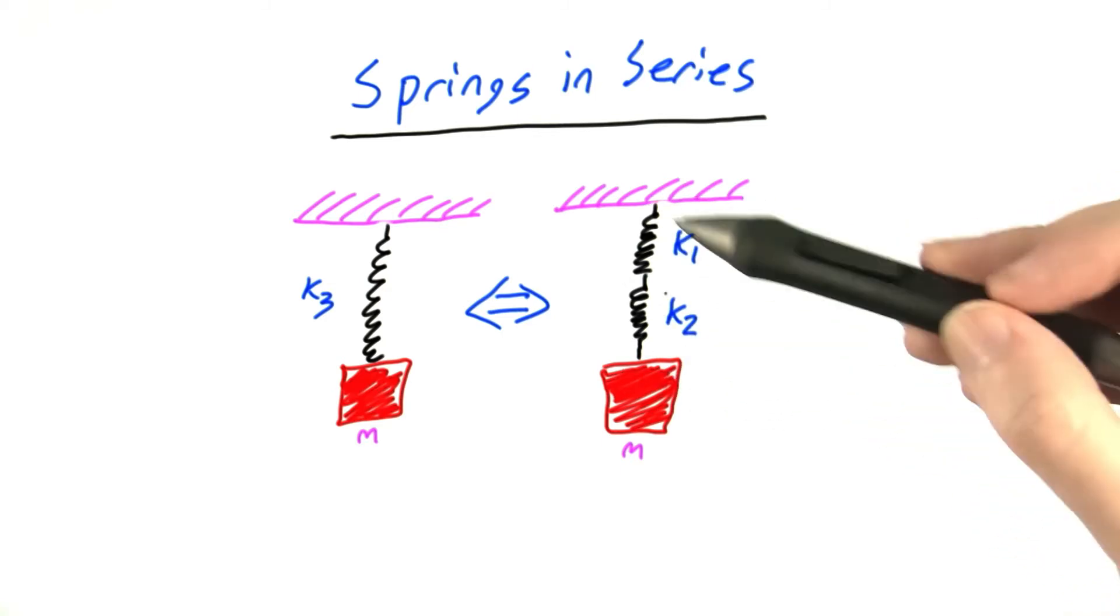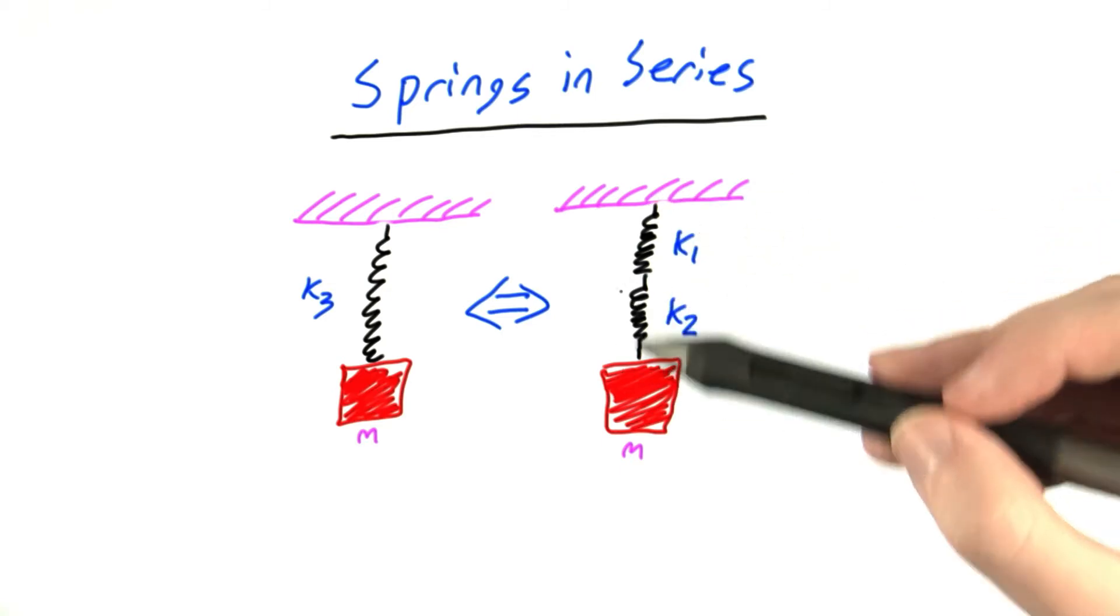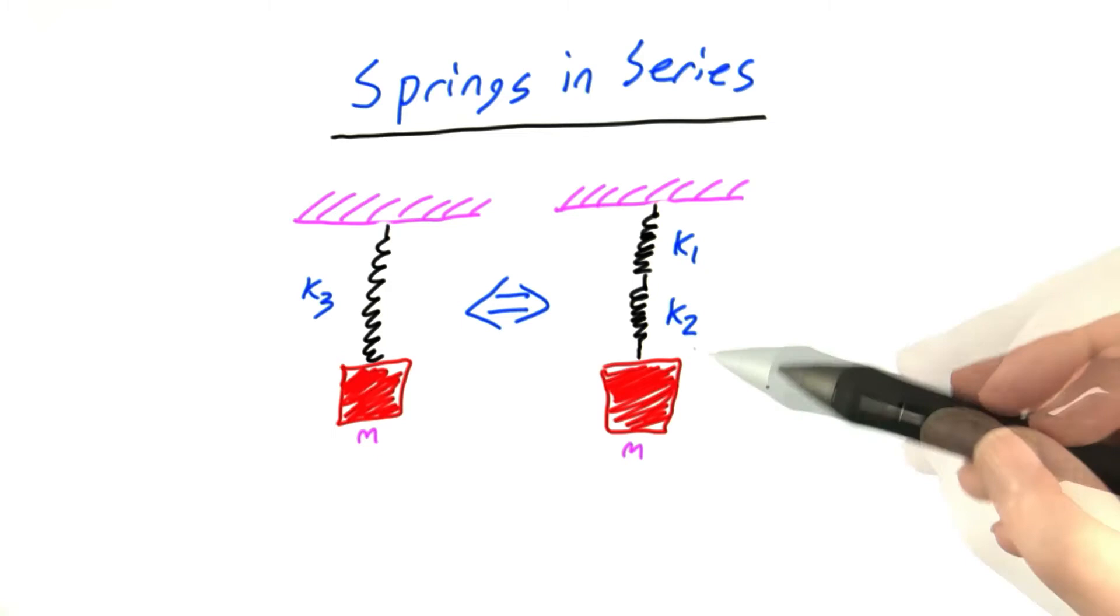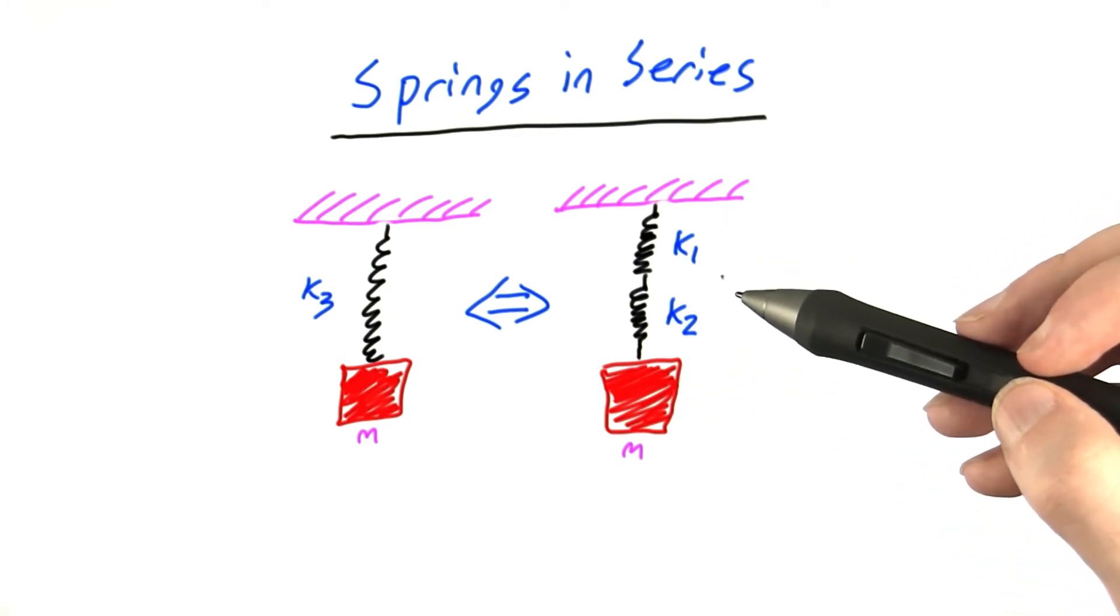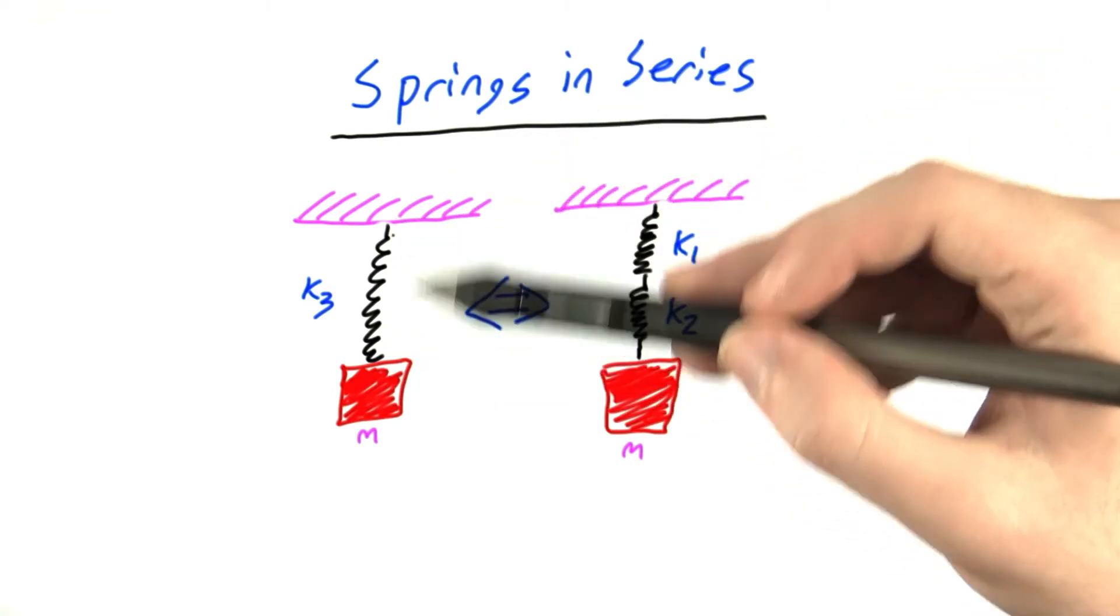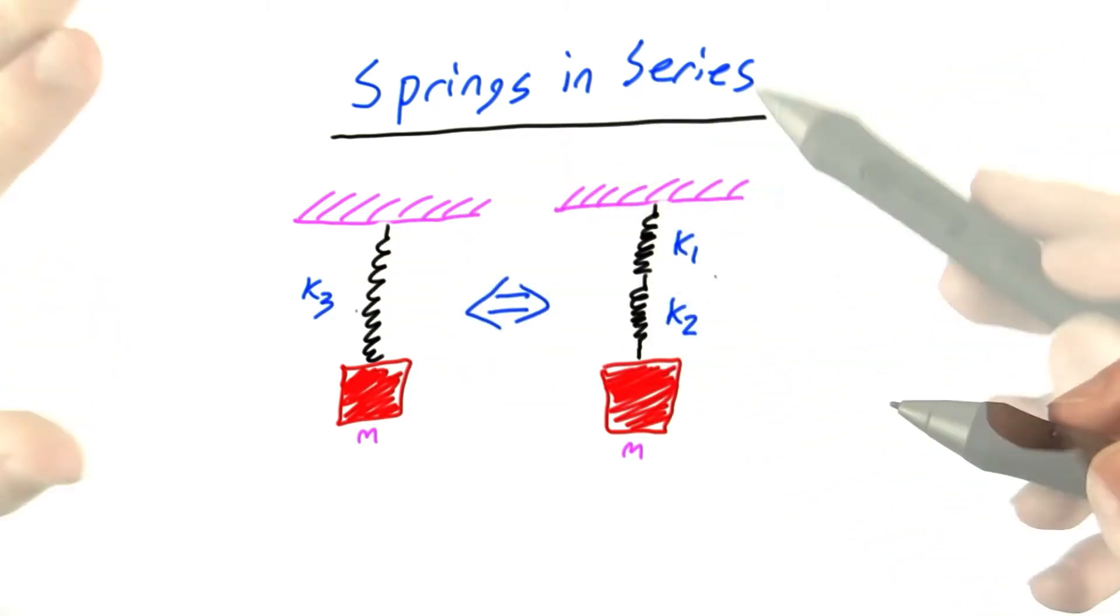This is what we call putting springs in series, rather than in parallel like we did with the shock absorbers. It turns out we can view a block dangled from two springs in this configuration as exactly the same as a single spring with a different spring constant.